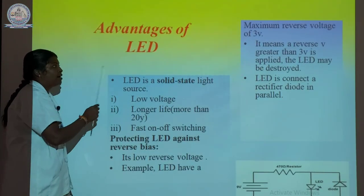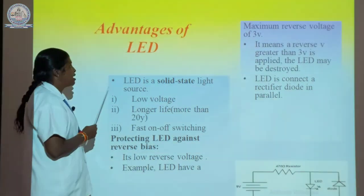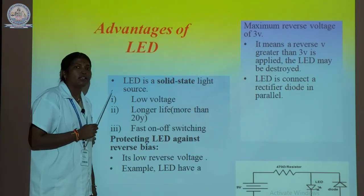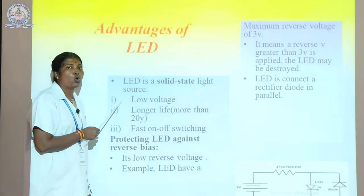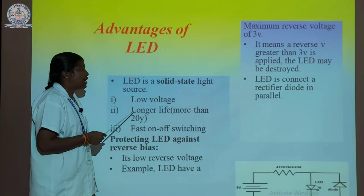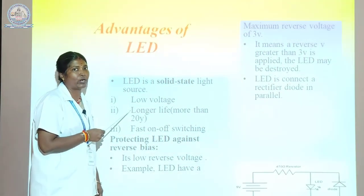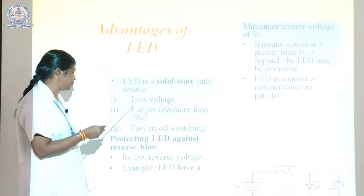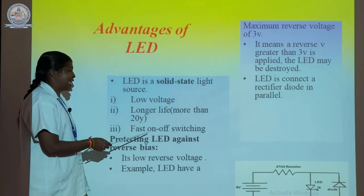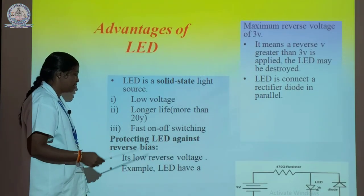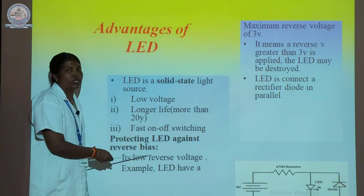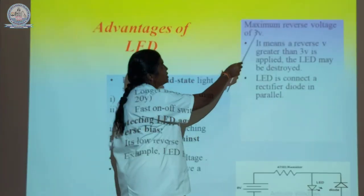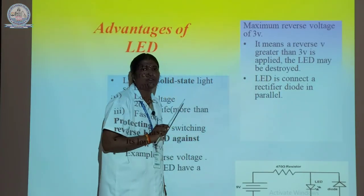The advantages of LED: it is a solid state source with low voltage level and longer life — more than 20 years. It is a fast on-and-off switching device. Regarding protecting LED against reverse bias — it has low reverse voltage. For example, an LED may have a maximum reverse voltage of 3 V, meaning that if a reverse voltage greater than 3 V is applied, the LED may be destroyed.